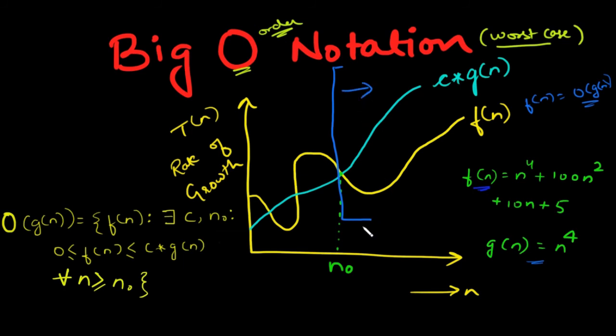In simpler words, whatever happens, we have to find two such constants c and n₀ such that, for all values of n greater than n₀, f(n) will never, ever be greater than g(n) when we multiply g(n) with c.